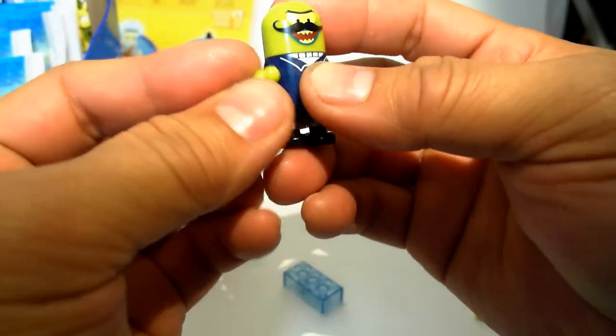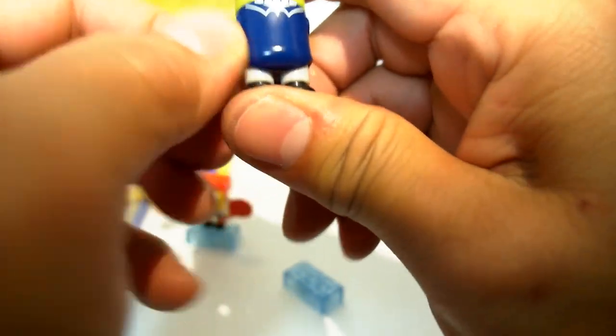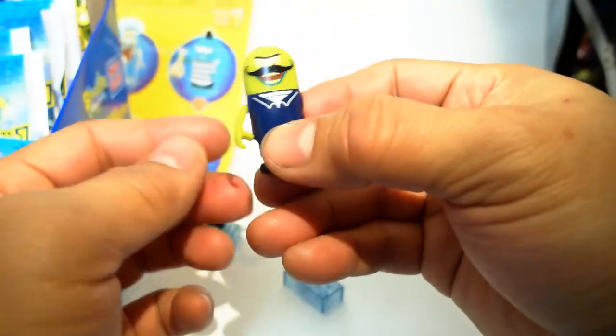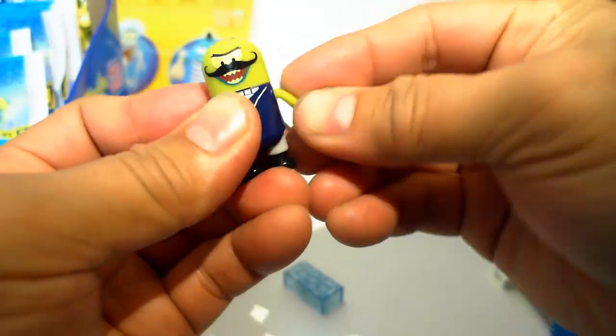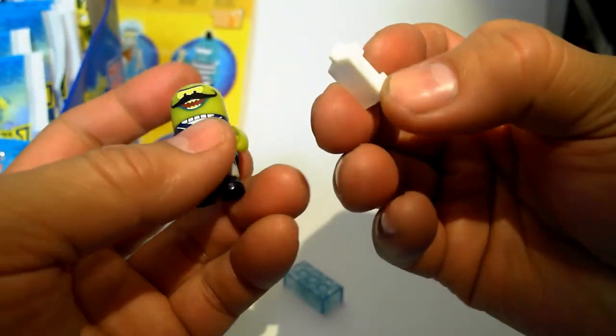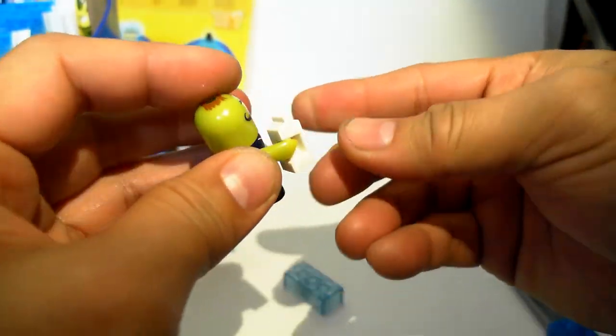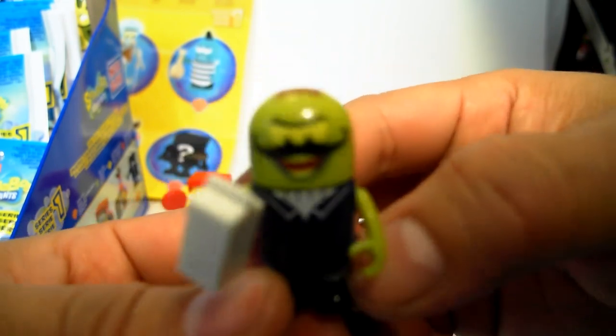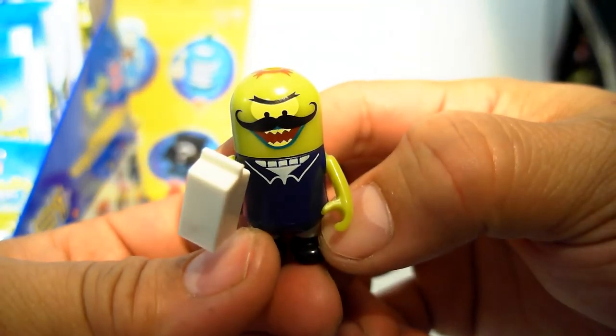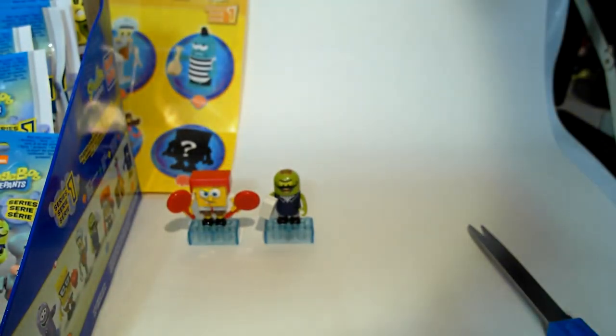So, Stranglefish. He's got that kind of look on his face. Let's put him on his body. He's got that, like, evil, twisty mustache. And then let's put his torso on. It's pretty awesome. I like these guys so far. I really, really think they're awesome figures.